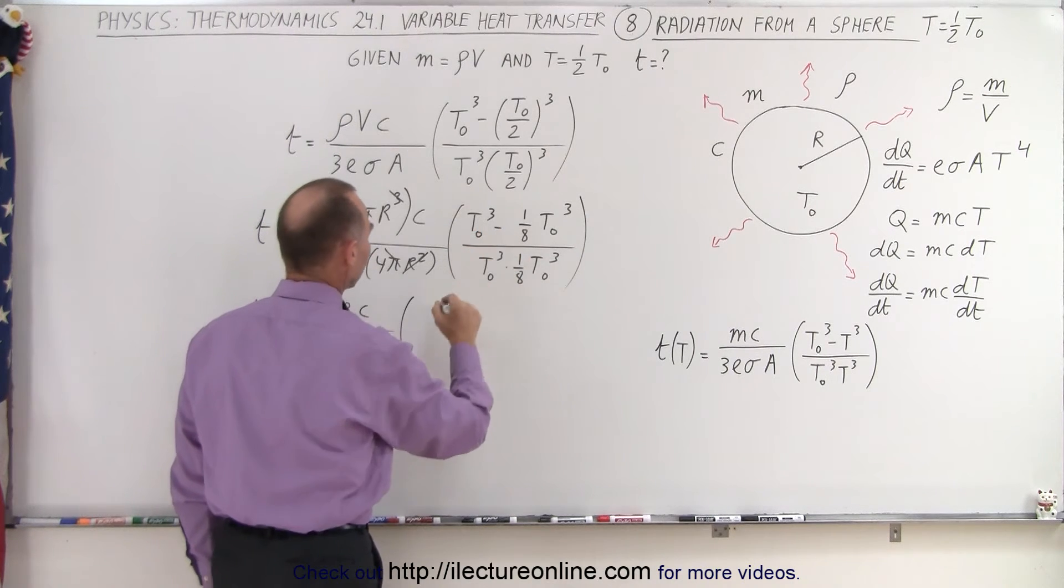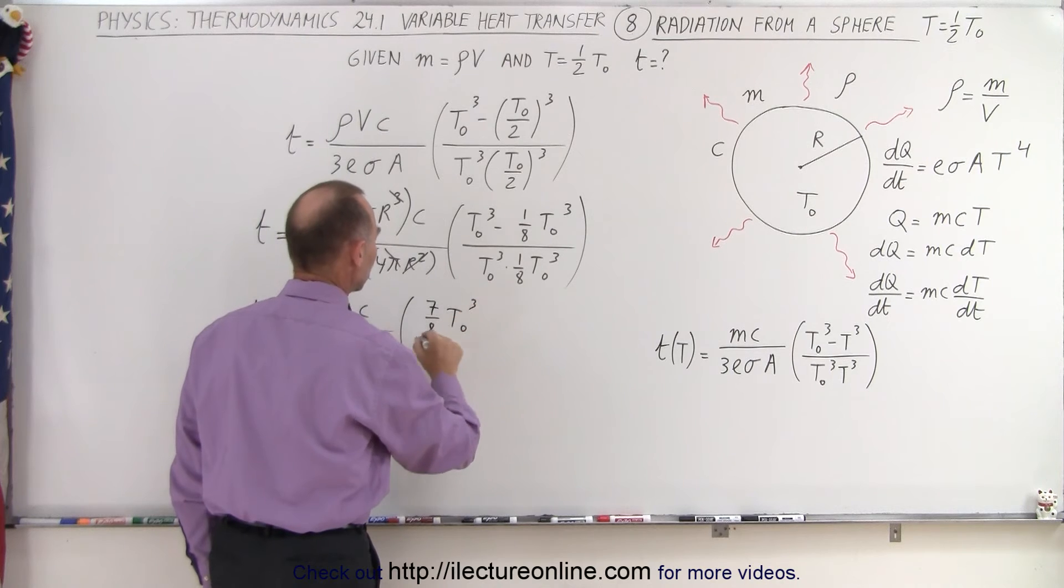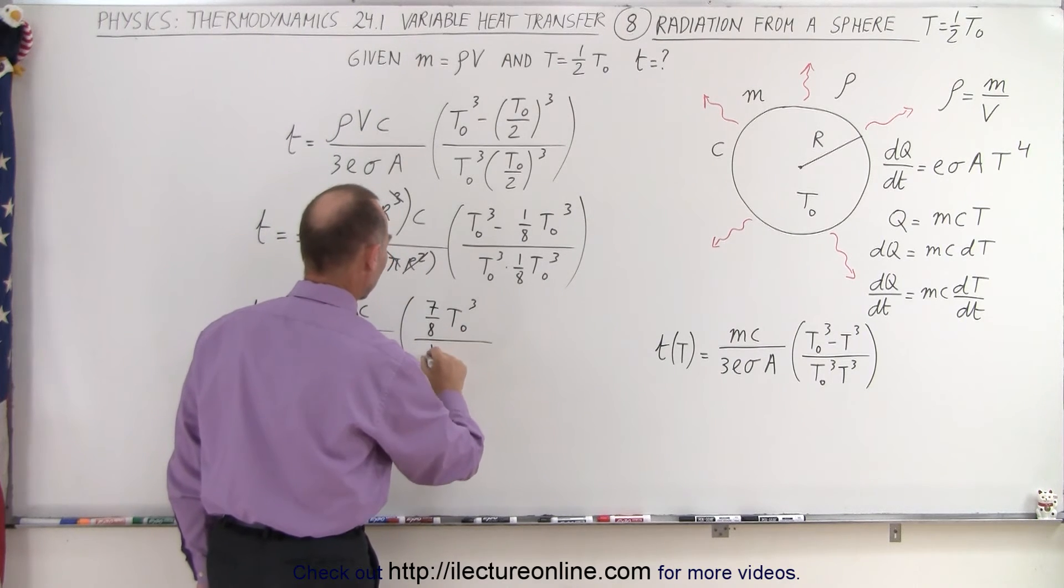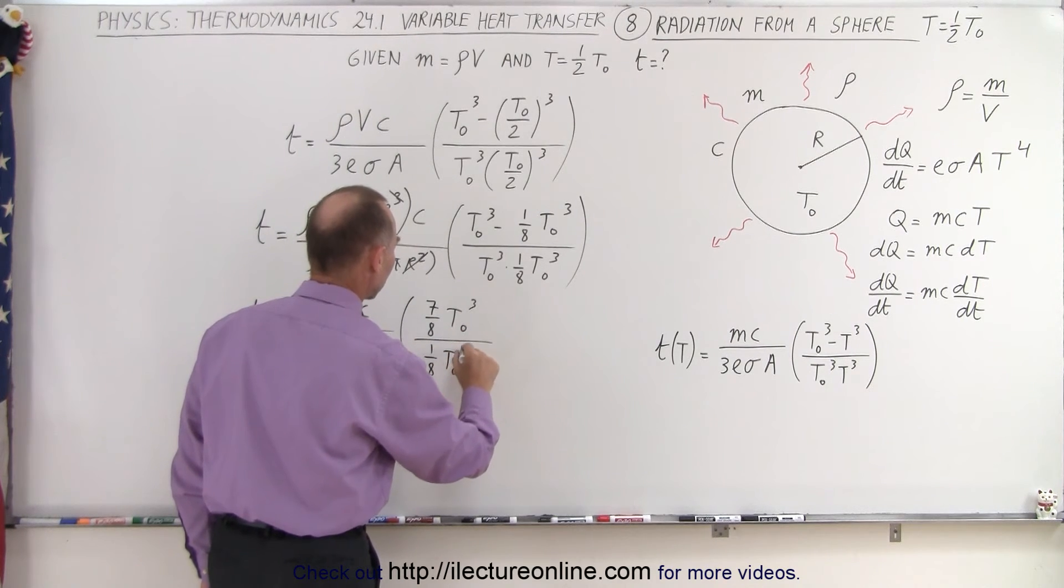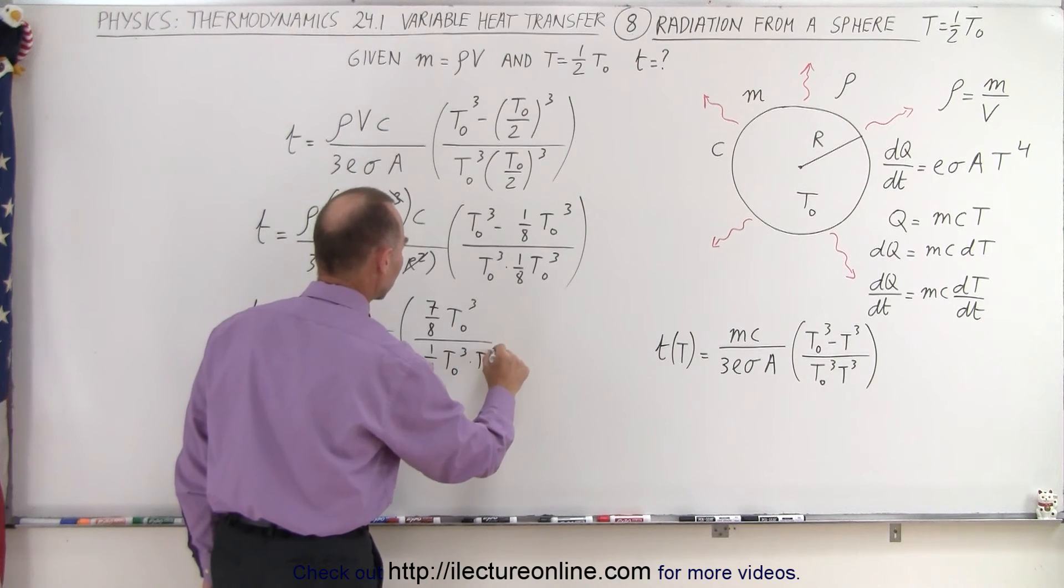And here, this minus that gives us 7/8 T sub-naught cubed, divided by 1/8 T sub-naught cubed times T sub-naught cubed.